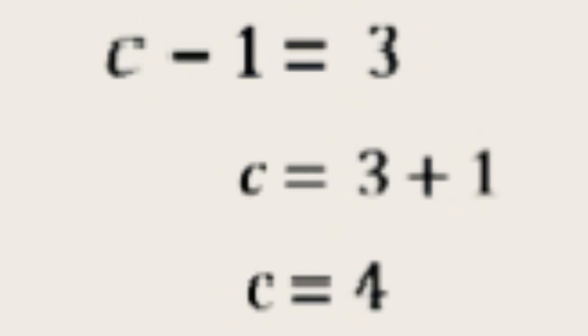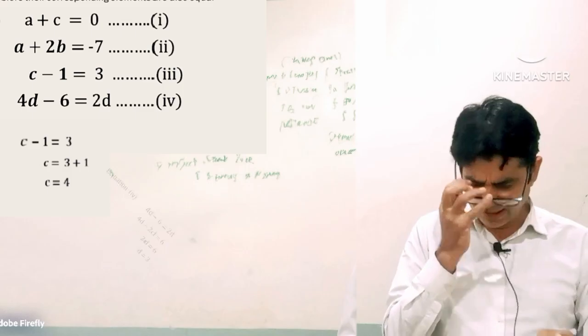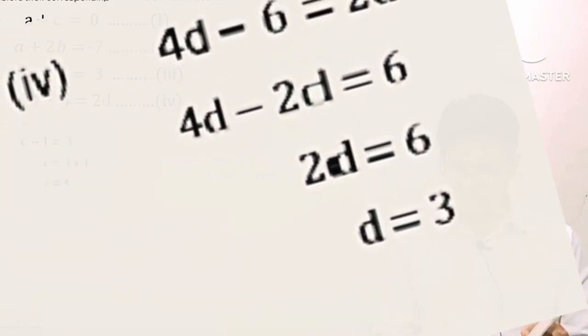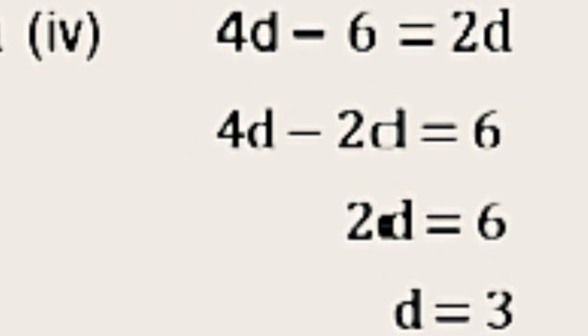From here we can easily find by taking 1 to the right side, c equals 4. And once again the next one which has only one variable is 4d minus 6 equals 2d, so 4d minus 2d equals 6, 2d equals 6, and d equals 3.